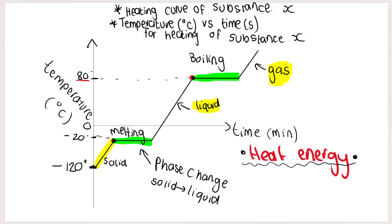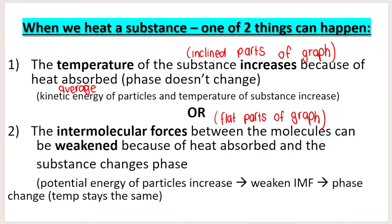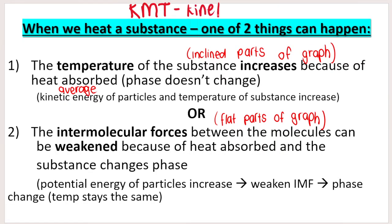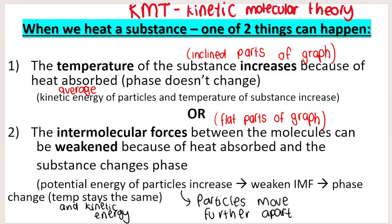According to the kinetic molecular theory, when we heat a substance, one of two things can happen. The first is that the temperature of the substance increases because of the heat absorbed — the phase doesn't change. The average kinetic energy of the particles, and therefore the temperature of the substance, increases. Average kinetic energy is a measure of temperature, so if average kinetic energy increases, temperature increases, but the substance remains in the same phase.